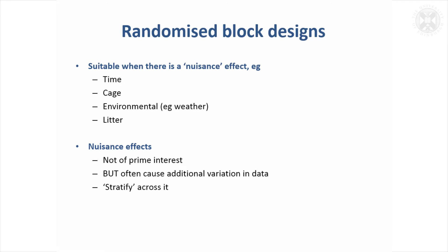Another important type of design — it's a bit like a two-level design really — is something that's become called a randomised block design. You want to randomise everything, so the random part of the title is a bit irrelevant. The block bit refers to the fact you're randomising over a nuisance effect. The key thing is there's some factor that you're not interested in studying, but you want to try and eliminate its effect from the study.